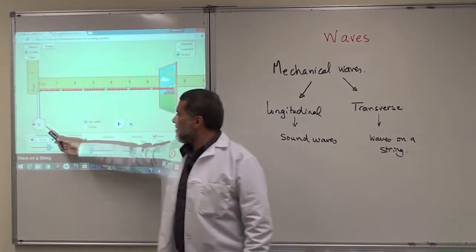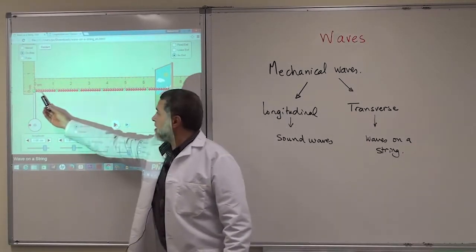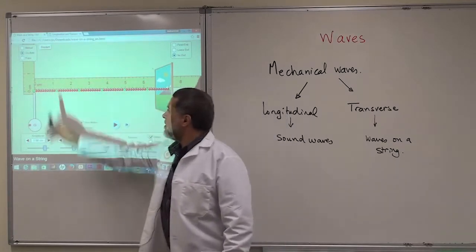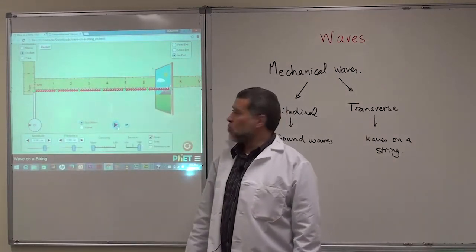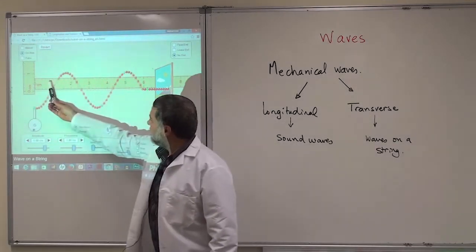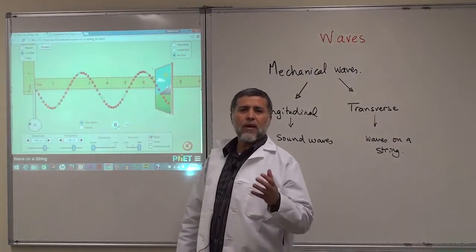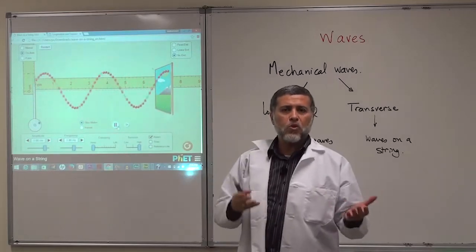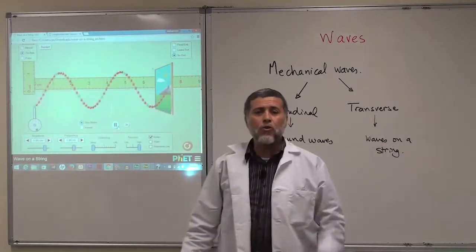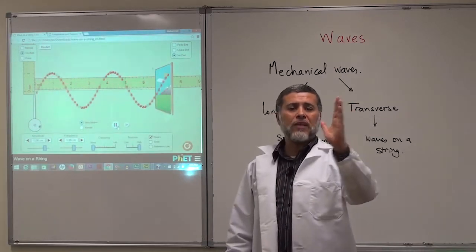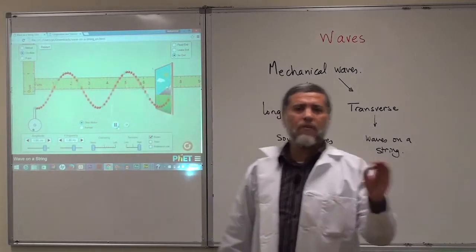As you can see in this animation, the source of the disturbance is here and the medium is this string. We are moving it up and down to produce the wave. The wave is moving to the right at a constant rate — the velocity of this wave is constant; it is not accelerating.